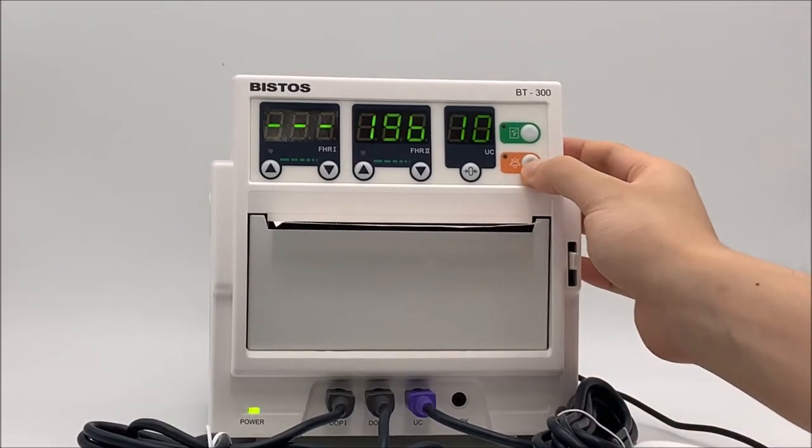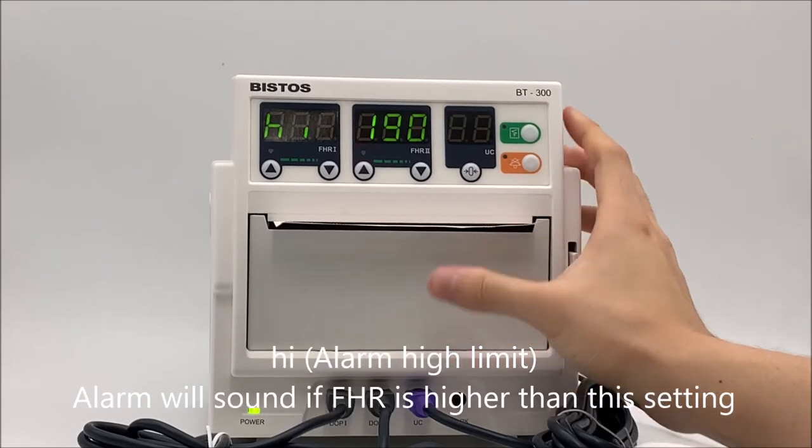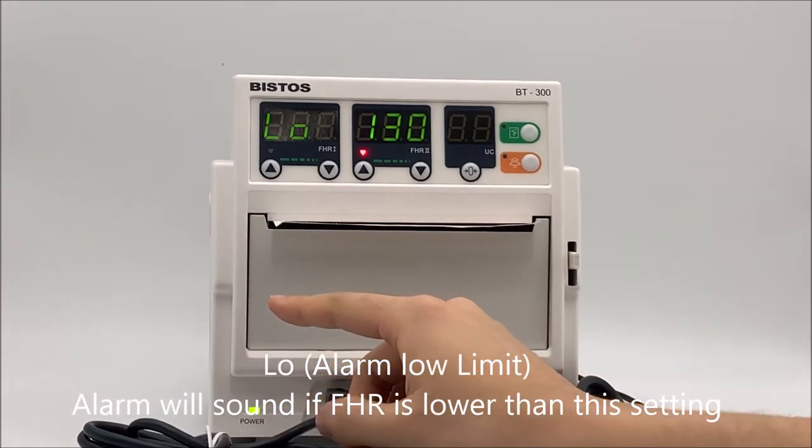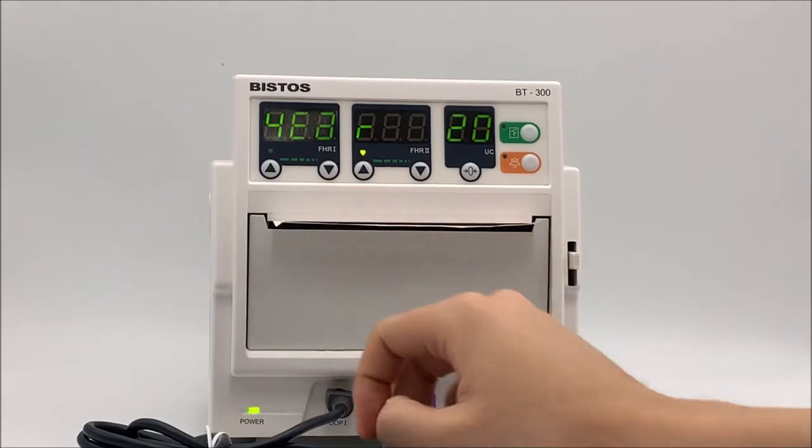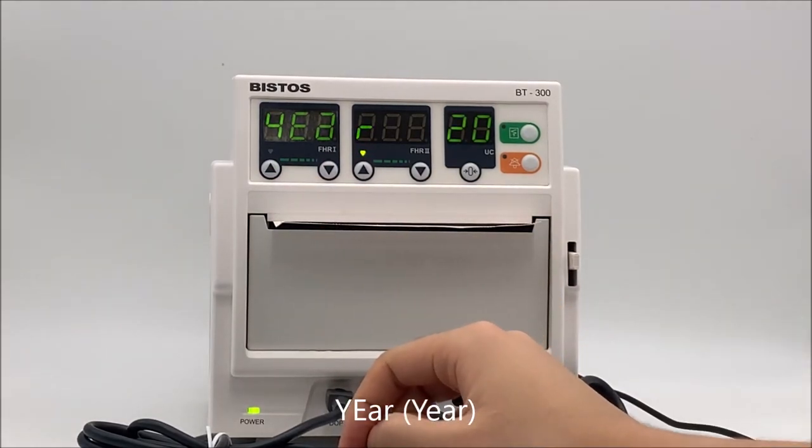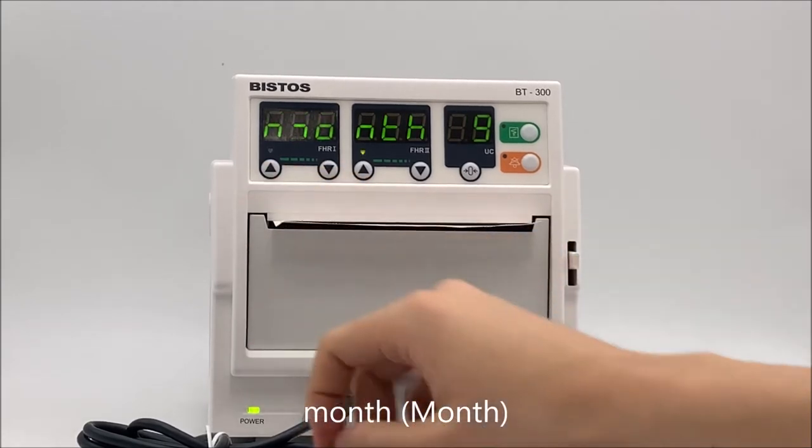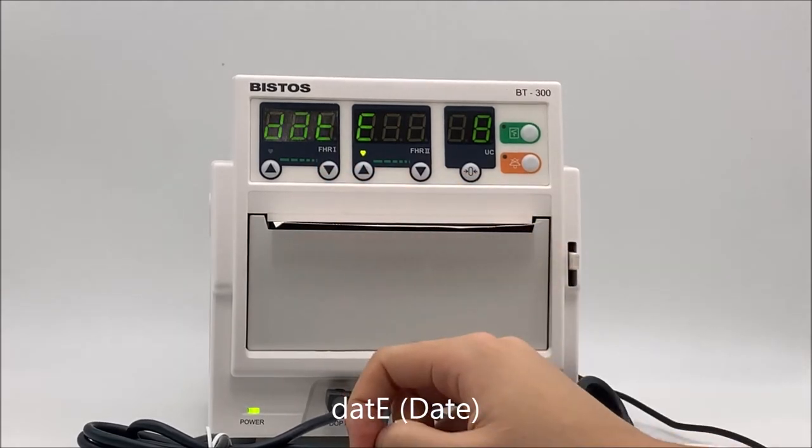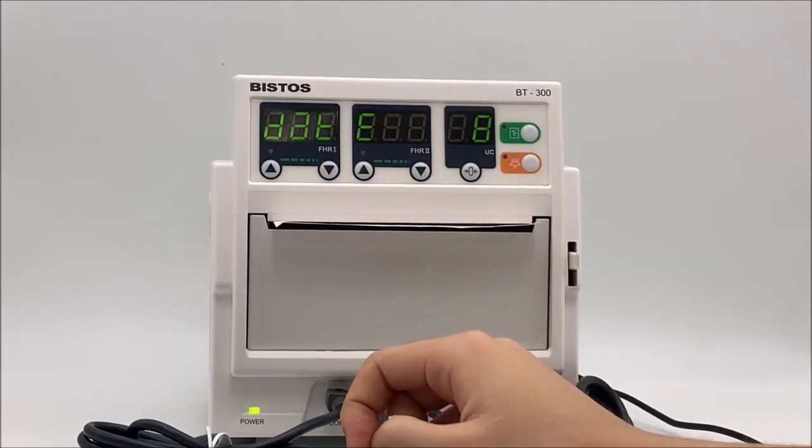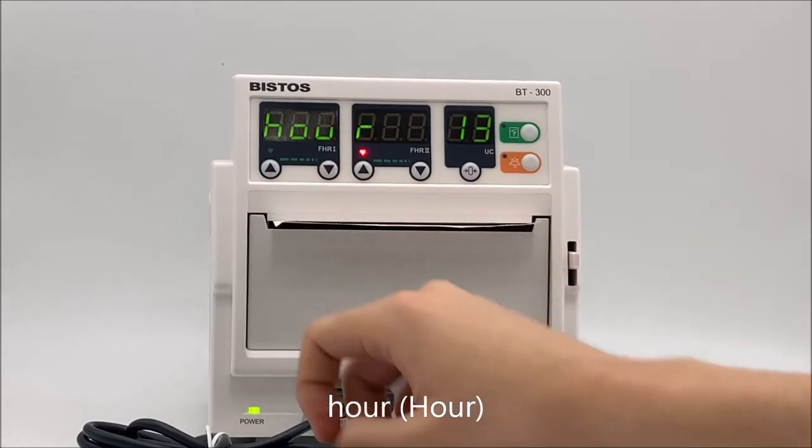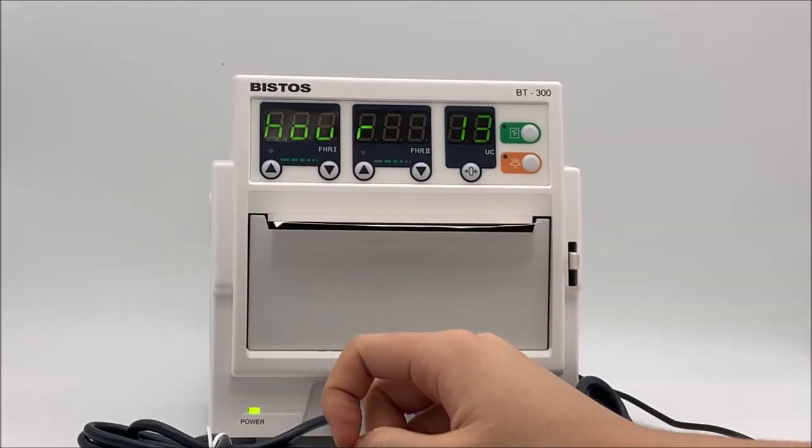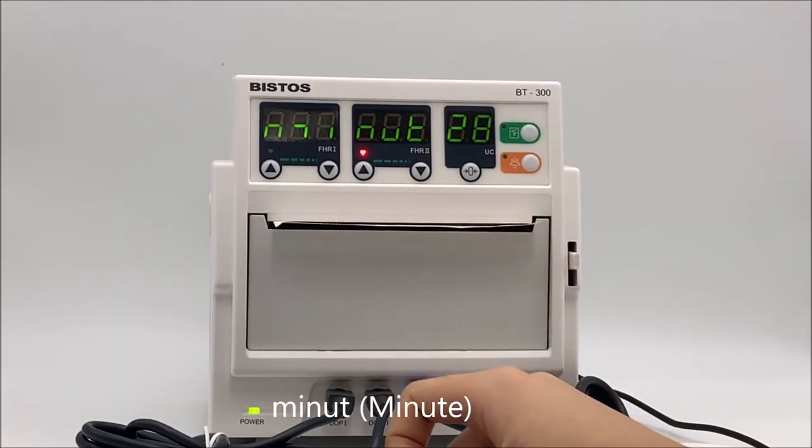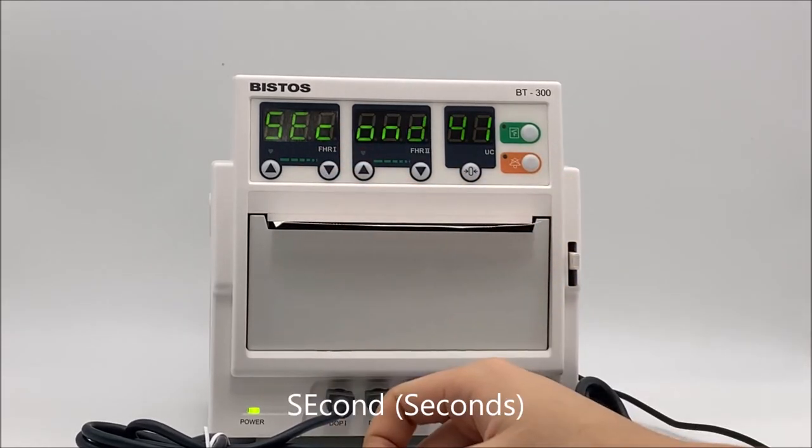Alarm and clock setup. Alarm high limit. Alarm low limit. Alarm will sound if FHR is lower than this setting. Year. Month. Date. Hour. Minute. Seconds.